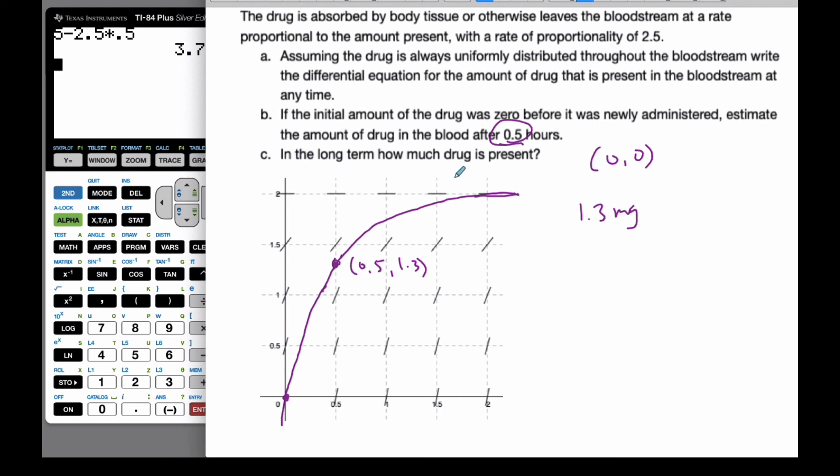And finally, in the long term, how much drug is present? Well, as you can see, all these slopes are 0. It's just going to get closer towards this. So the long term, there's going to be 2 milligrams of the drug. So it'll hit an equilibrium point of going in and coming out by the body, and that can be seen by this constant slope of 0 here.